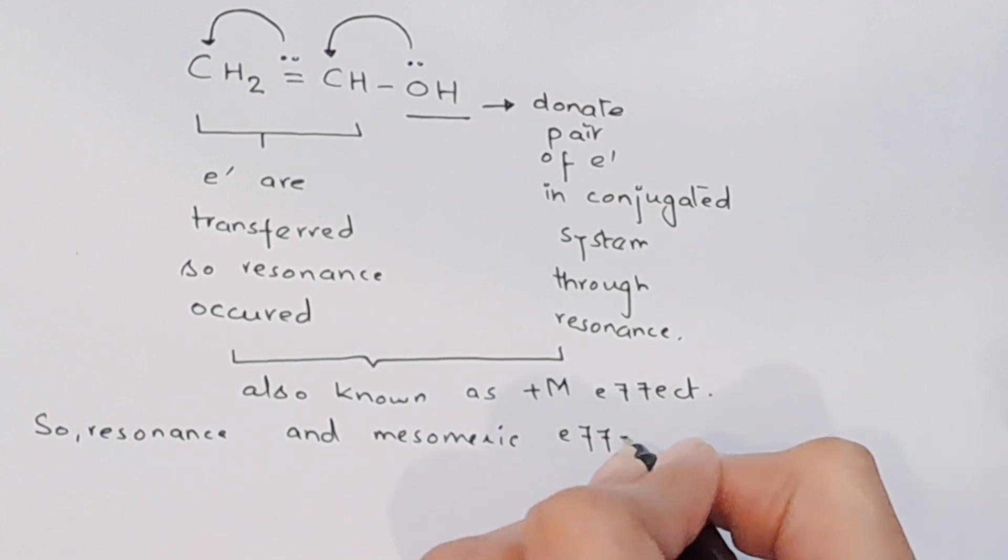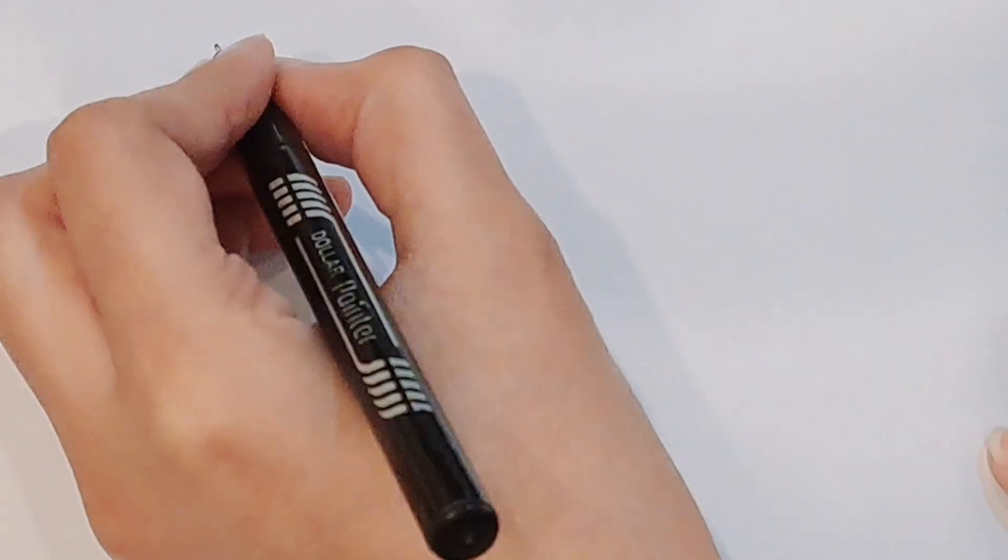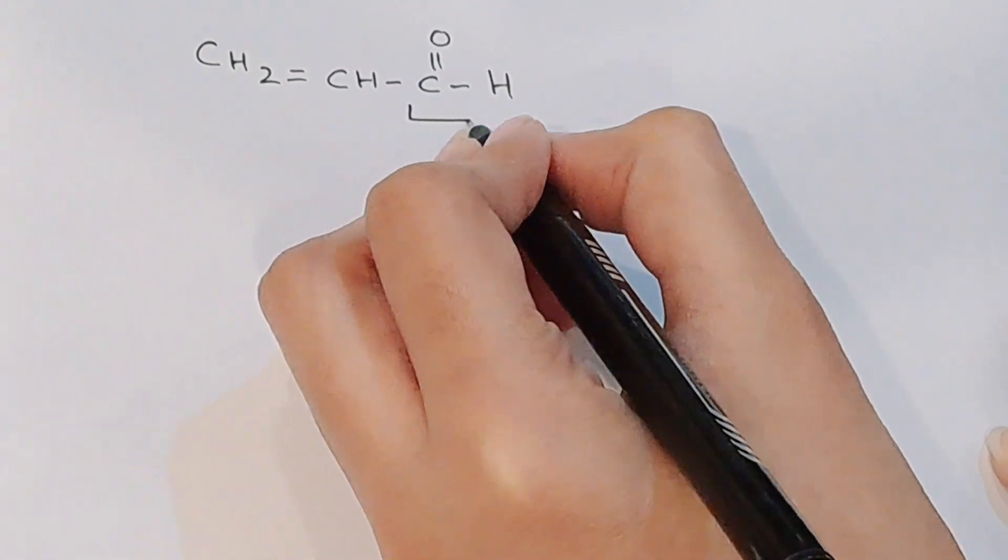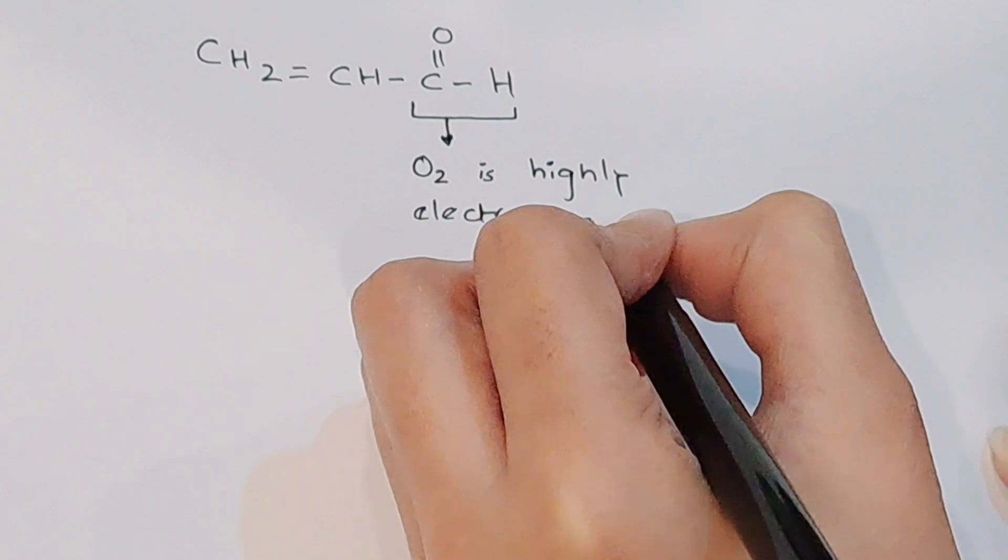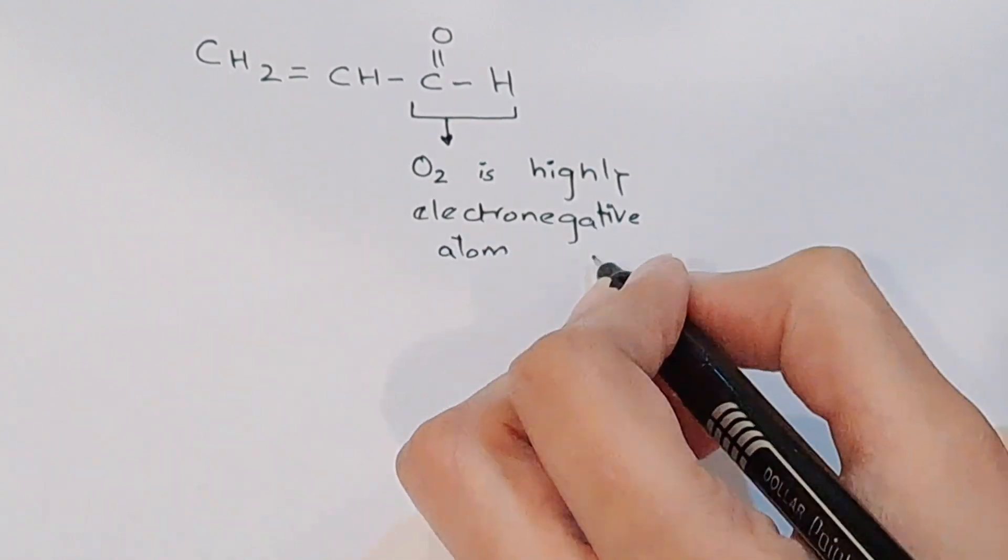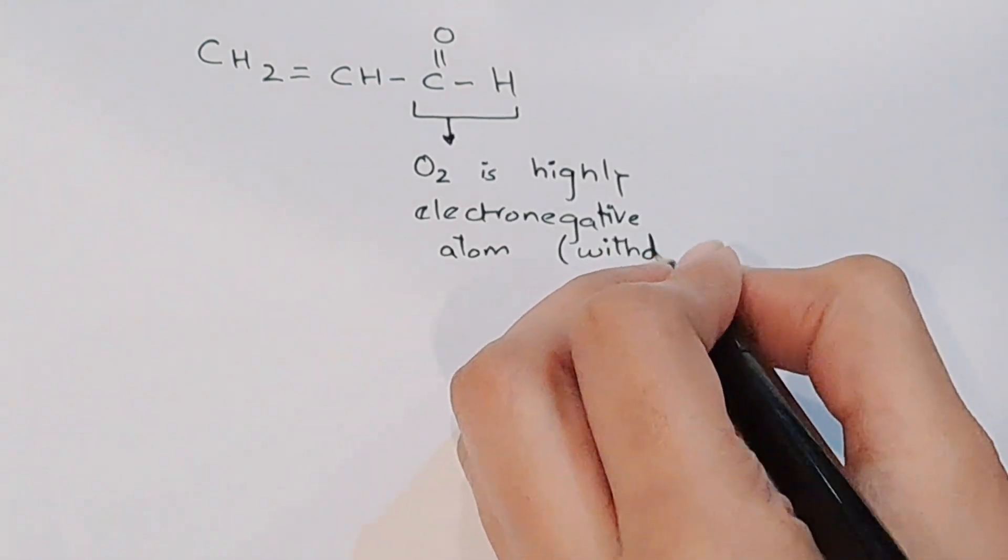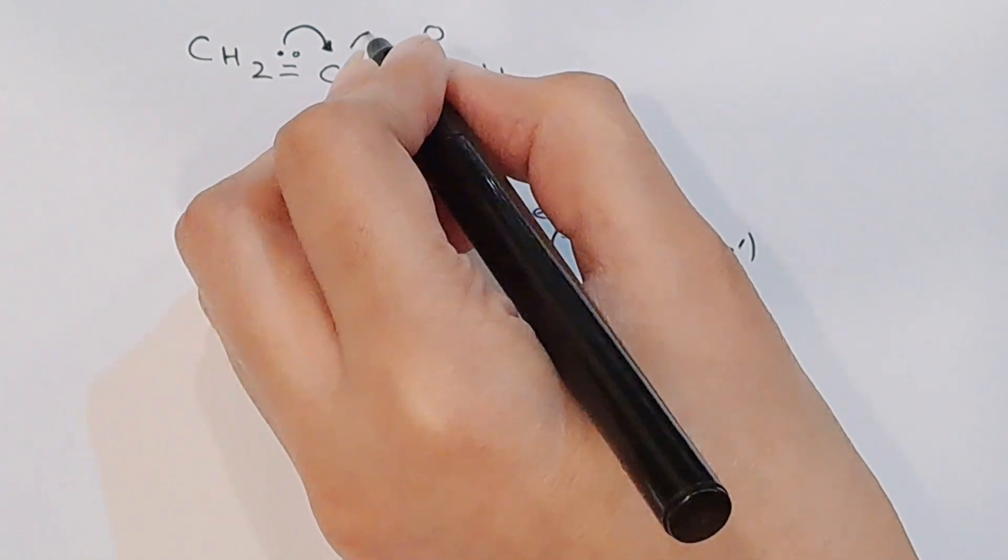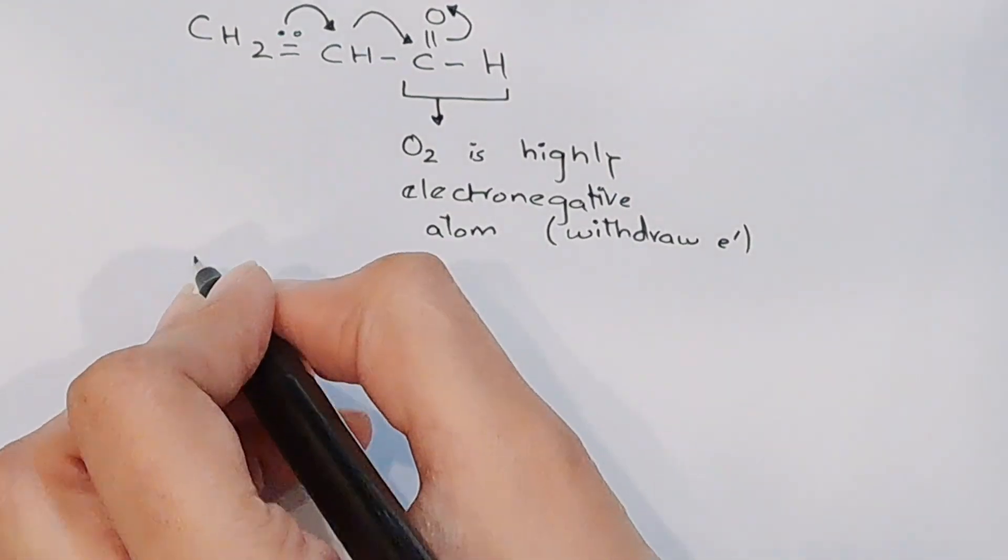Now we consider another example having oxygen. This oxygen is a highly electronegative atom. Higher the electronegativity, the more it attracts electrons. Oxygen will attract these pi electrons and the double bond is shifted in the system. This aldehyde group withdraws electrons from the conjugated system through resonance.